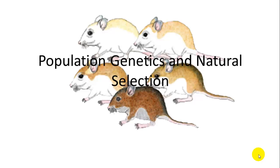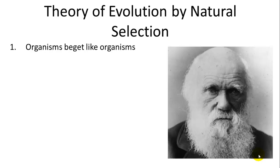This lecture is going to be on population genetics and natural selection, and of course how they are connected. I first want to briefly go over the main principles that Darwin stated as he first put forth his theory of evolution by natural selection. The first is that organisms beget like organisms.